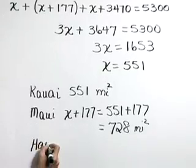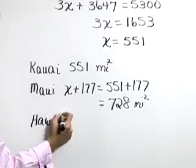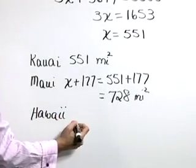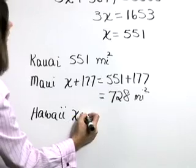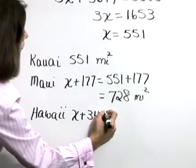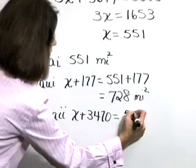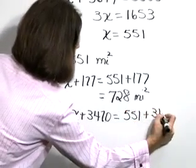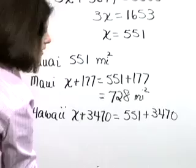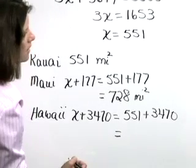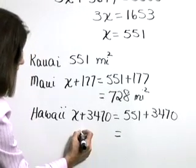Hawaii has an area given by X plus 3,470. Again, X is 551 plus that 3,470.